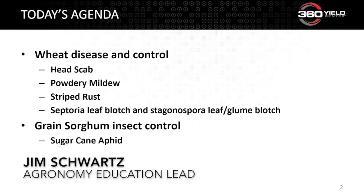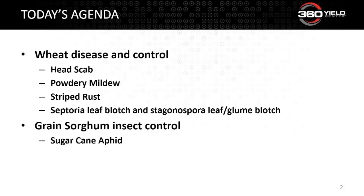The thing I wanted to cover is some things going on as it relates to diseases and insects in the environment we're dealing with right now. Especially in the eastern Corn Belt and east, it's been much wetter and cooler than normal, so there are some diseases in wheat we're concerned about. Also in the south, there is an insect in grain sorghum that is beginning to become an issue. We want to discuss how some products from 360 can help mitigate those issues.